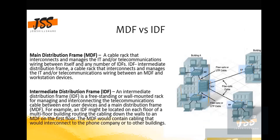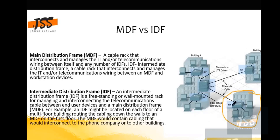The basic idea is end-to-end connectivity as well as redundancy. The MDF is a cable rack that interconnects and manages IP or telecommunication wiring between itself and a number of IDFs. The IDF is an Intermediate Distribution Frame — these are wall-mounting racks for managing and interconnecting cable between user devices and the main distribution.